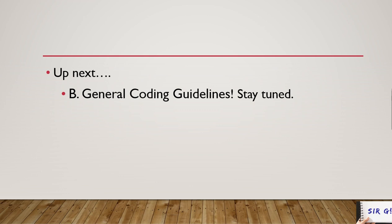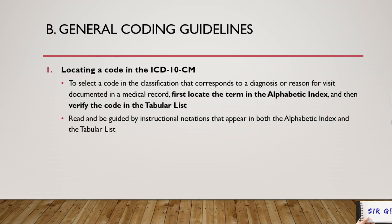In your ICD-10-CM 2020, the first general coding guideline is number one: locating a code in the ICD-10-CM book. To select a code in the classification that corresponds to a diagnosis or reason for visit documented in the medical record, first you need to locate the term in the alphabetic index.